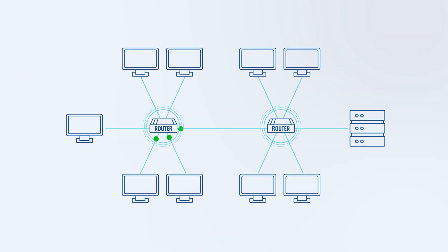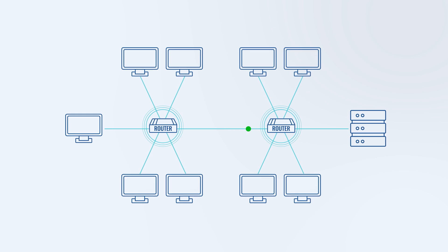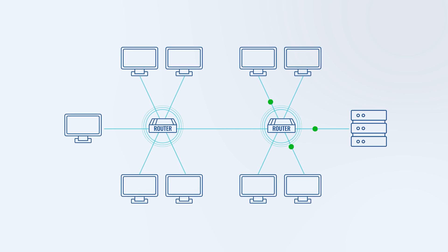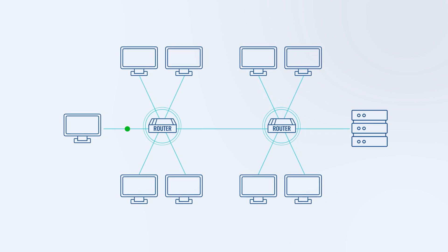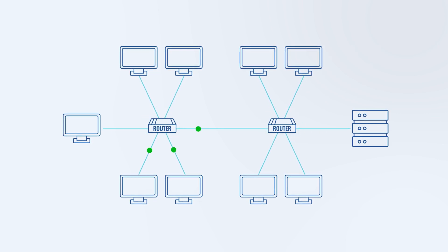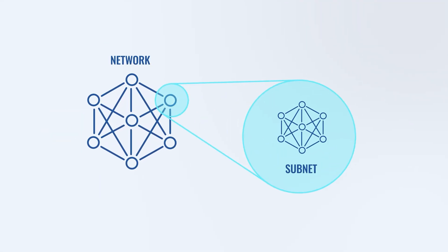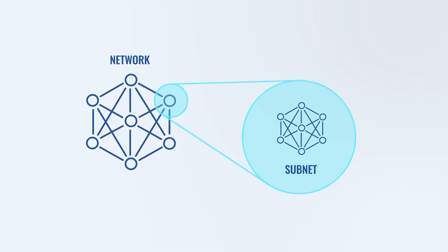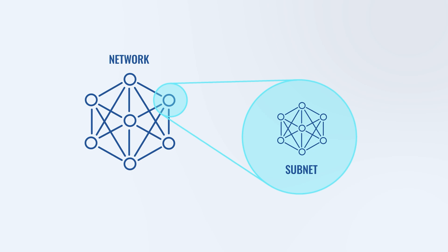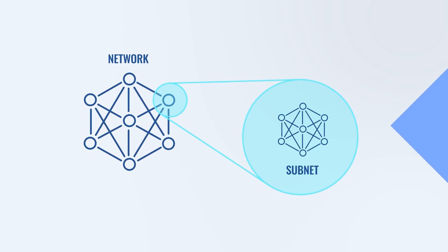Multicast is a type of group communication where data transmission is addressed to a group of destination devices simultaneously. A subnet is a segmented piece of a larger network, dividing an IP network into multiple smaller network segments.